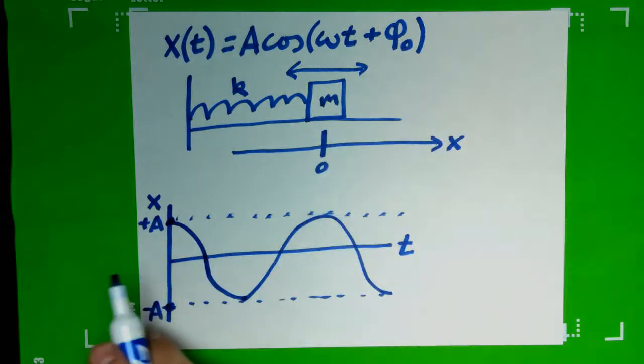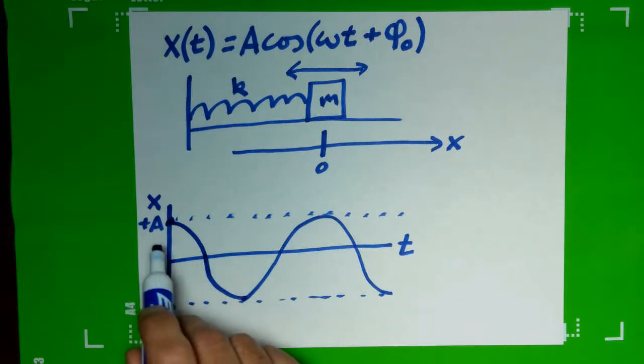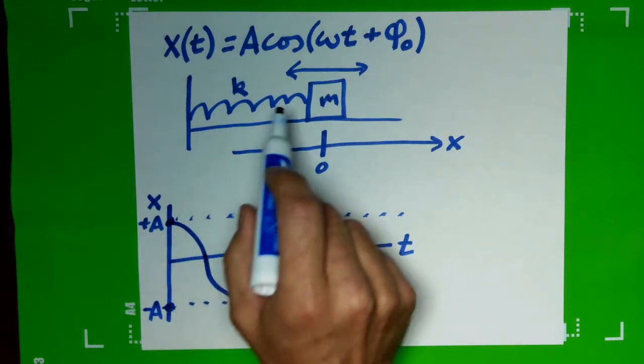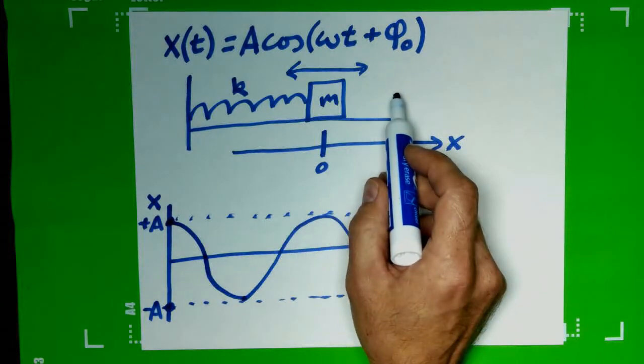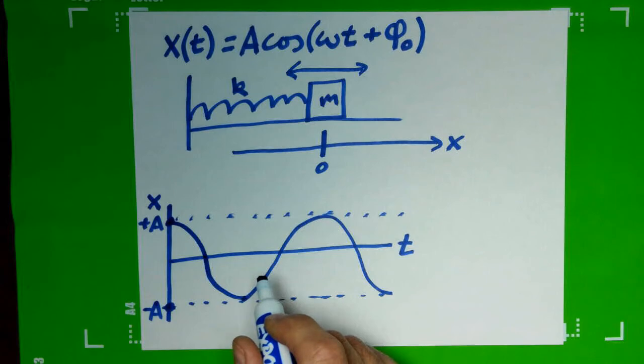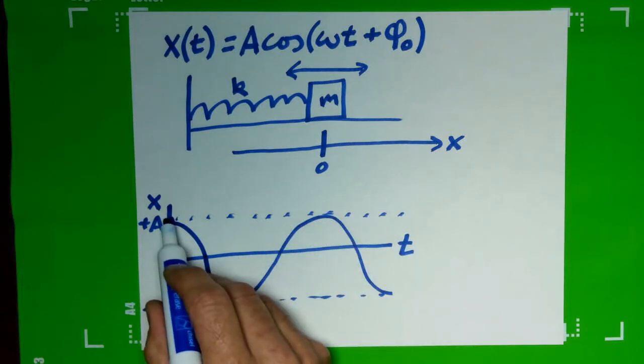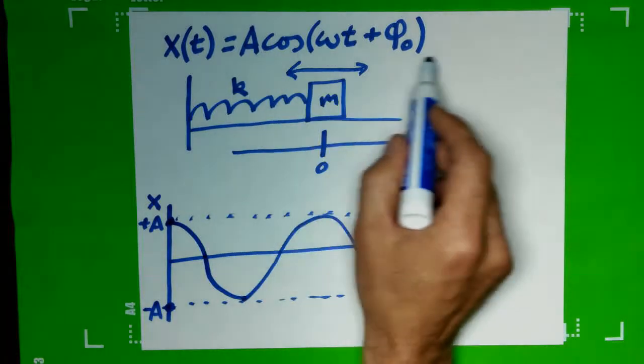The phase constant basically describes how does it start, when do we start our time. In this particular case we've chosen we've pulled it all the way and let go. Well, this looks awfully like a simple cosine function, just cosine of omega t, because I'm starting at maximum amplitude, which means my amplitude is multiplied by one.